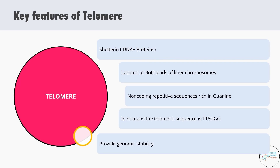The function of telomeres is to provide genomic stability — by preventing the loss of genes or genetic information contained in those genes during replication. They also maintain the structural integrity of the chromosome, and this is why telomere shortening beyond a limit is a reason to worry.